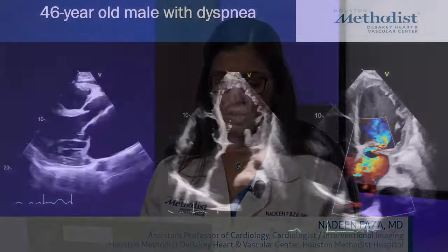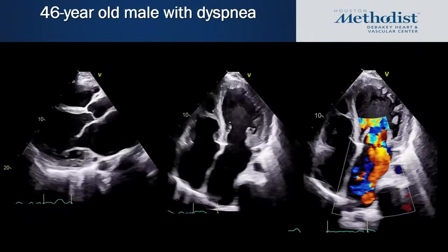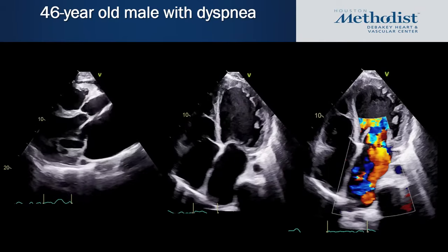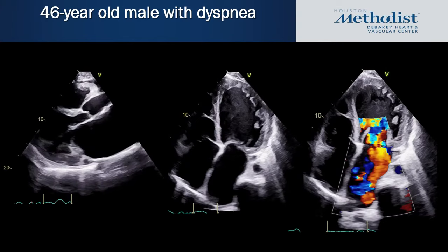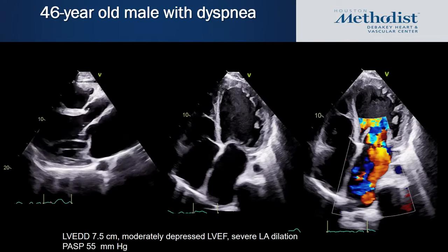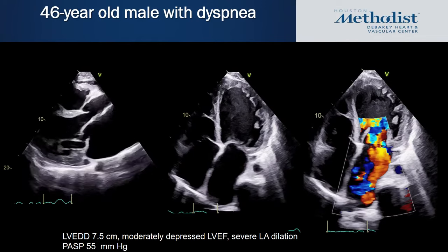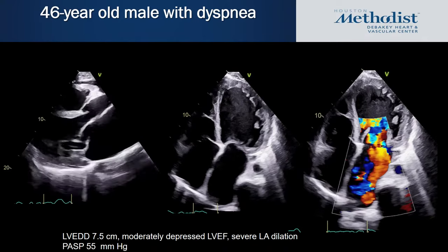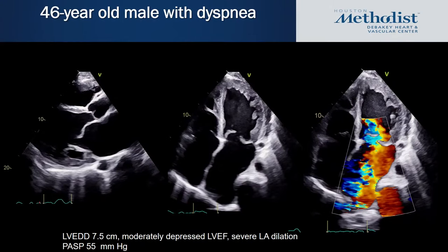A young patient presenting with dyspnea showing severe LV dilation, moderately depressed EF, a flail posterior leaflet, severe LA dilation, and pulmonary pressures of 55 mmHg demonstrates consequences of significant MR — LA dilation, LV dilation, pulmonary hypertension, and depressed EF all point toward a hemodynamically significant lesion.